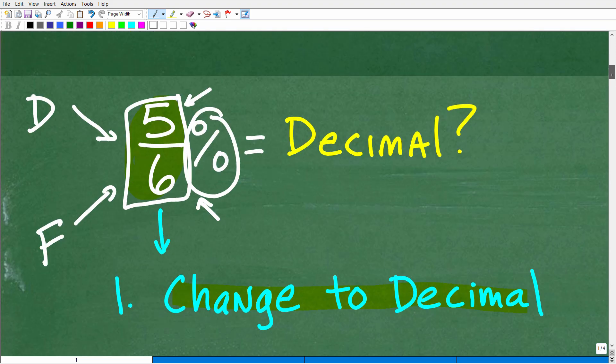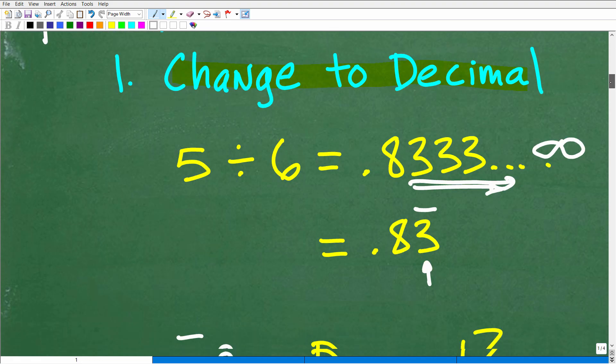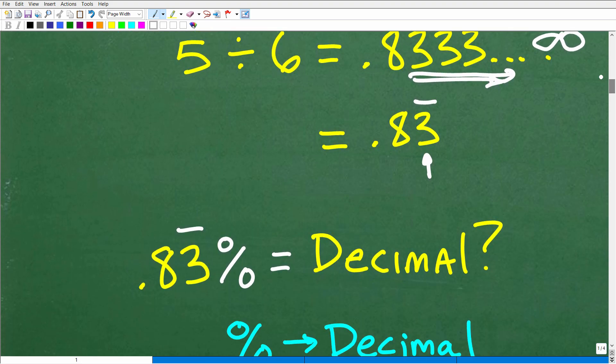Okay, so that was step 1. First step, again, was changing this fraction into a decimal. So now our equivalent problem is the following. Okay, so instead of that 5-6%, now we have 0.83 repeating percent. Okay, so that is now our new problem, right? So just because we did this doesn't mean we can just drop our percent. We kind of have to control the process here, right?